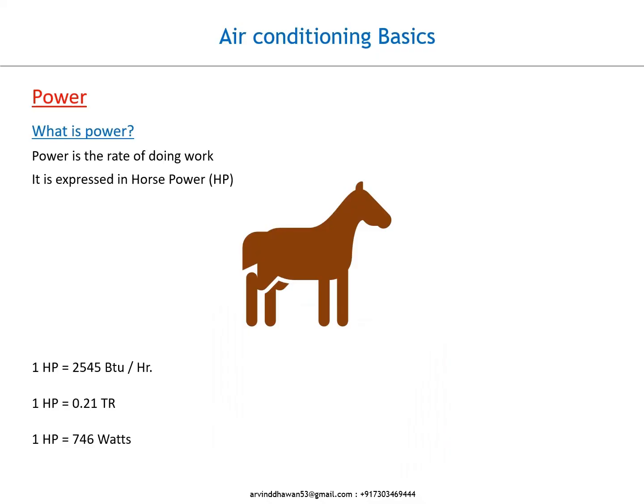What is power? Power is the rate of doing work. It is expressed in horsepower (HP). 1 HP = 2545 BTU per hour; 1 HP = 0.21 TR; 1 HP = 746 watts.